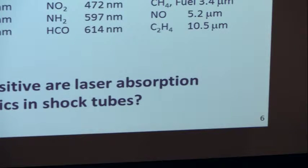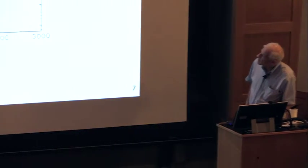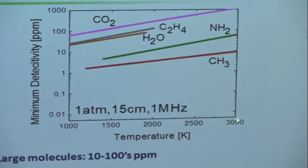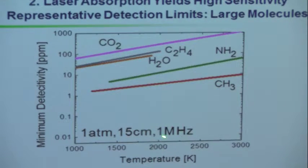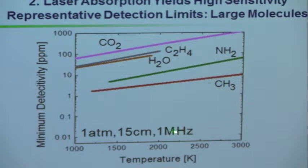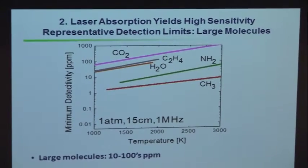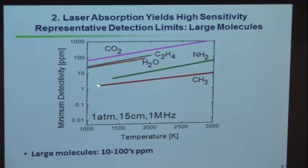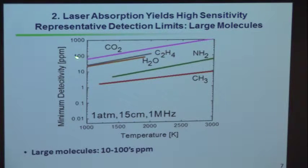The question is: how sensitive are our absorption diagnostics? We made a plot of detection sensitivity — minimum detectable parts per million of various species versus temperature — for a path length of 15 cm, pressure of one atmosphere, and bandwidth of one MHz. Noise goes up with frequency, so quadrupling frequency doubles the white noise. We also need to know the pressure because pressure together with temperature determines the broadening coefficient and line shape. The detection limit goes up with temperature as the fractional population in the state decreases. For big molecules, we're in the range of about 100 parts per million.